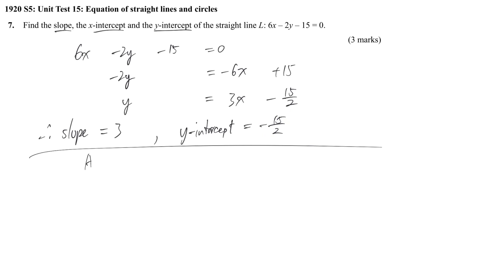Then we consider the x-intercept point. For any line's x-intercept point, we know that the height is zero. So we are finding the corresponding x in this situation. At x-intercept point, we are talking about y equal to zero. So 6x minus 2 times zero minus 15 equals zero.